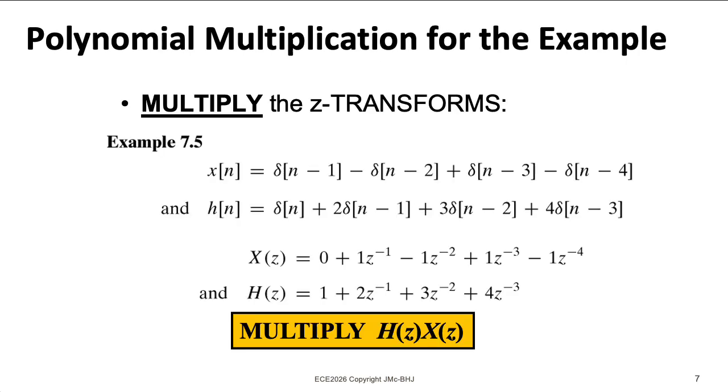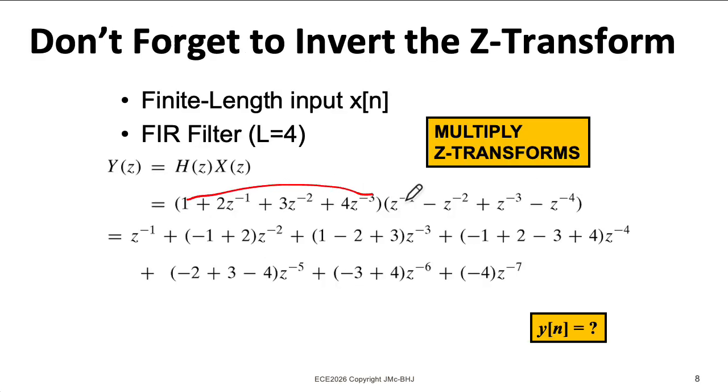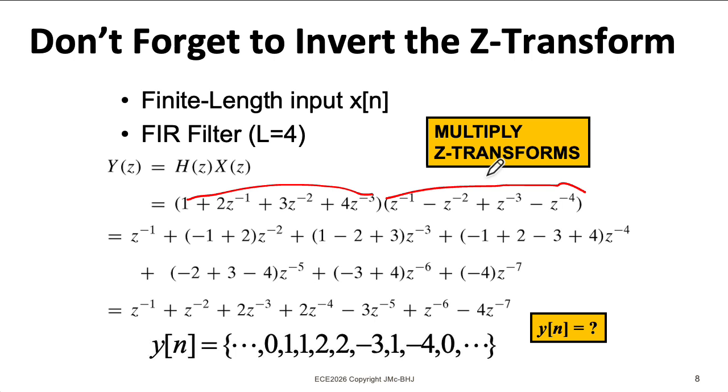Alternatively, we could perform the convolution by multiplying the corresponding Z-transforms. So here we have the Z-transform of H, here we have the Z-transform of X, and then we can work through the algebra of multiplying those polynomials, ultimately giving this result. But note, we're not quite done yet. This is the Z-transform of the result. We want to convert it back into the time domain. And to do that, you can just read off the coefficients, or if you want to write it as an equation, you could write this out using delta functions.